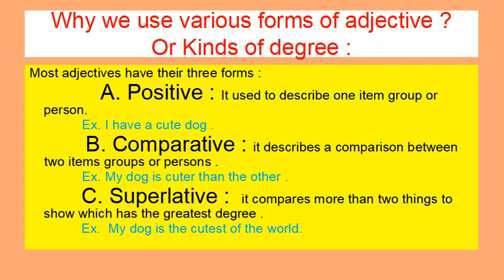Superlative degree compares more than two things to show which has the greatest degree. For example: 'My dog is the cutest in the world.' So in positive degree we mention only one item, in comparative degree we compare two objects or items, and in superlative degree we compare more than two items.